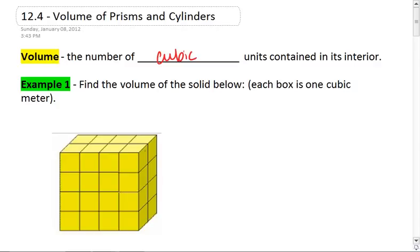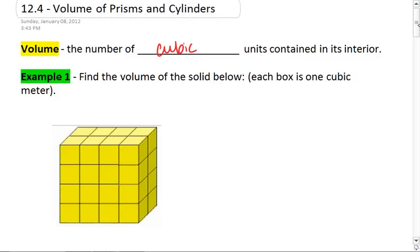Alright, for this one, we notice that we can actually count up the boxes. So if we look, we can see that our bottom row is four boxes wide and two boxes deep. So this bottom row has two rows of four boxes, which means we have eight boxes.